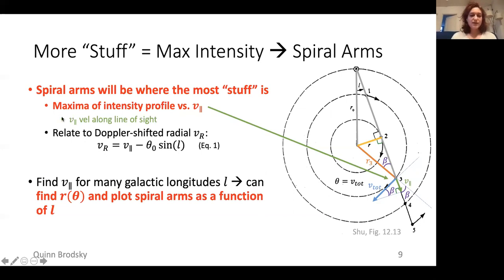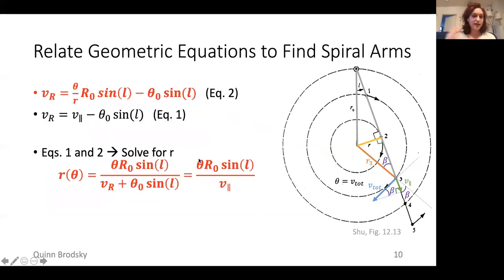Those correspond to points that have velocities that I've called V parallel in green, which are the velocities along the line of sight. By combining these equations, we can plot the locations of the most stuff for each line of sight, which should correspond to the spiral arms. It just takes a little bit of algebra to relate these expressions to things that we can measure. But once we do this, we can plot R as a function of the angle of observation between 0 and 90 degrees, and we can find the spiral arms.